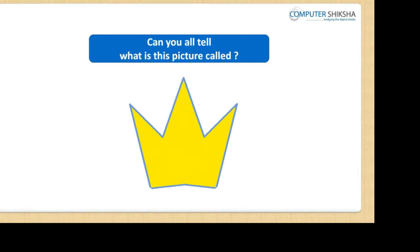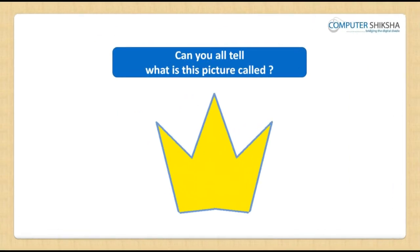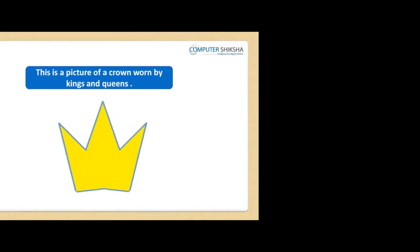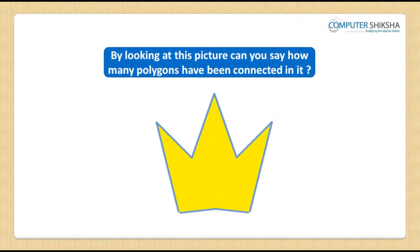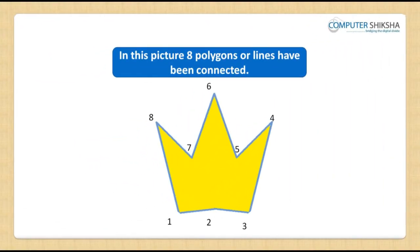Can you all tell what this picture is called? This is a picture of a crown worn by kings and queens. By looking at this picture, can you say how many polygons have been connected in it? In this picture, eight polygons or lines have been connected.